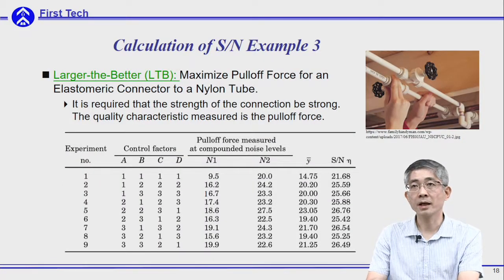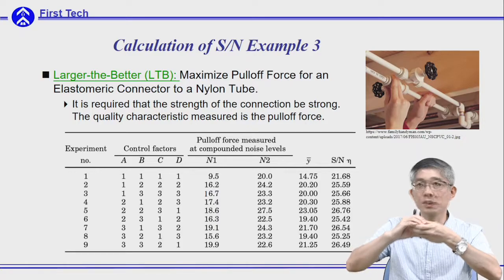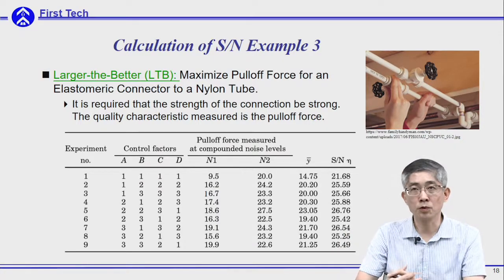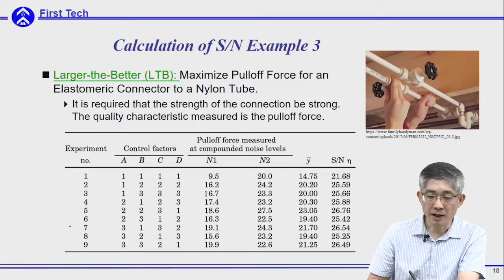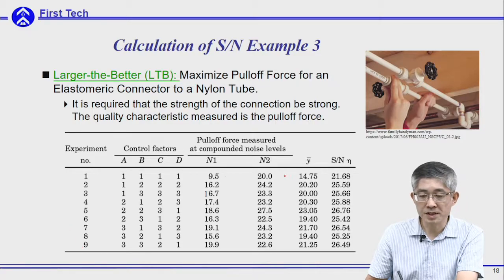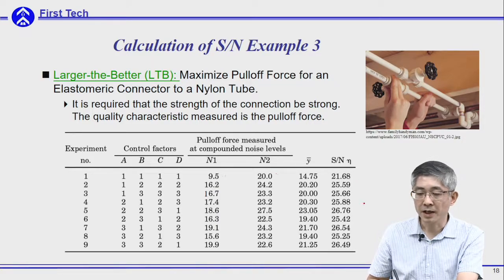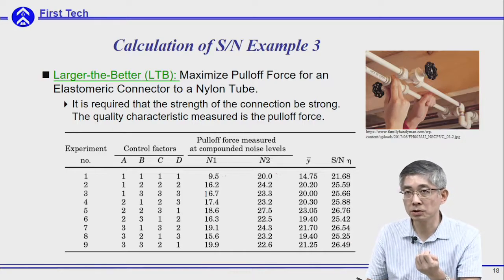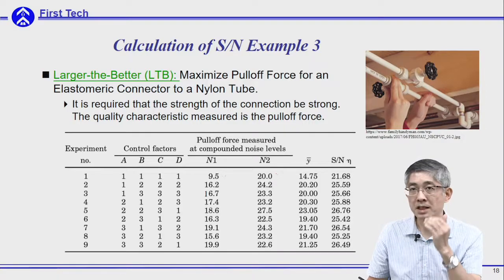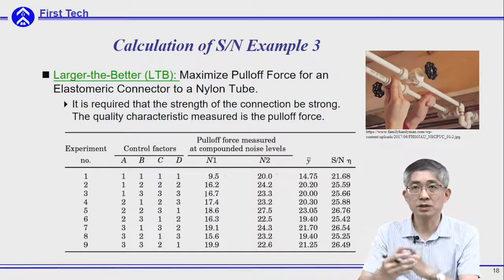The next example is a connector using a nanotube where you want to maximize the connecting strength, measured by the pull-off force — a larger-the-better case. There are nine different designs with two samples each. By substituting these samples into the larger-the-better SN ratio formula, you get the SN values. The preferred design is the one with the largest SN ratio, reflecting the largest mean pull-off strength and the smallest standard deviation of the strength distribution.